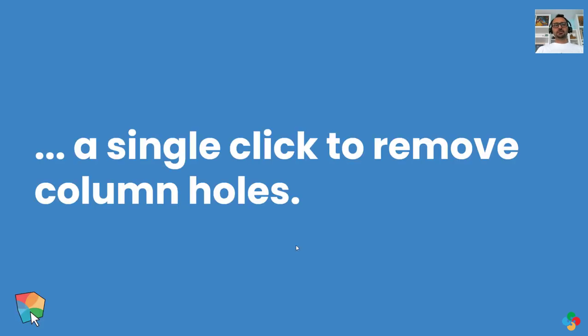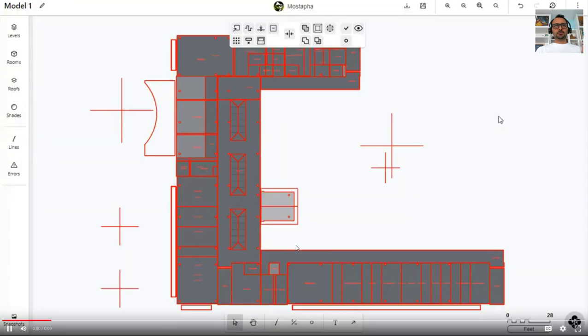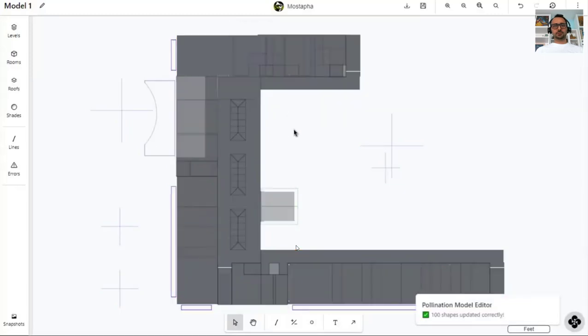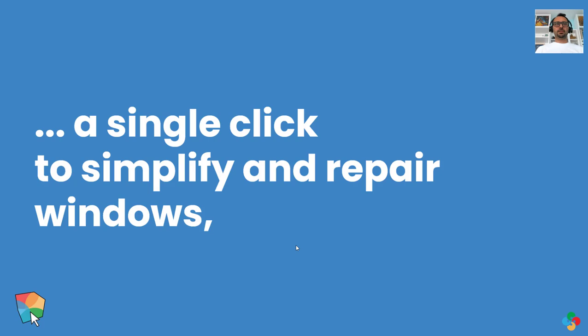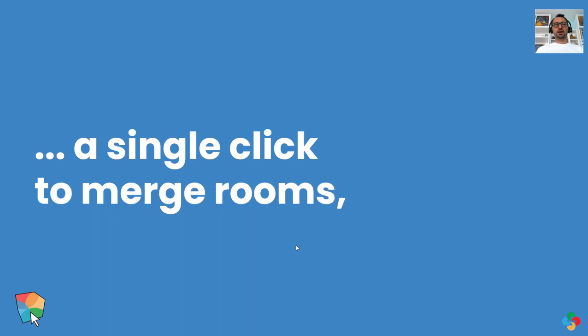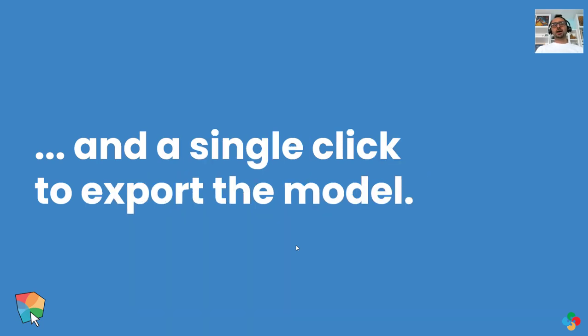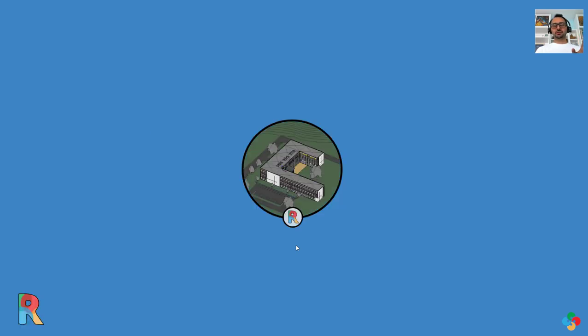Then there is a single click to remove all the column holes. You just have all these holes. You just select and say, remove all the holes that are smaller than 10 square feet here, which is a large number. But anyways, all the columns are fixed. And there are similar commands for simplify and repairing windows. We have command for merging rooms, validating model. And most importantly, there is a single click to export a model that you can really use.